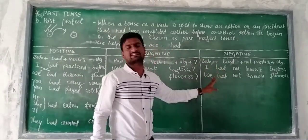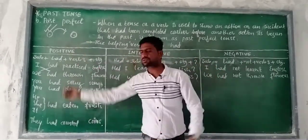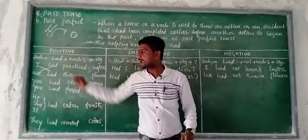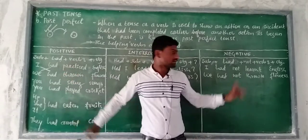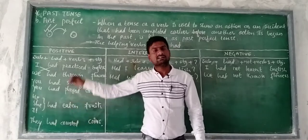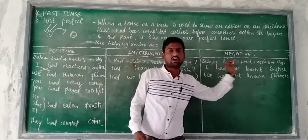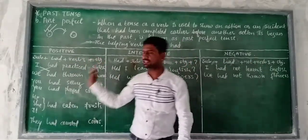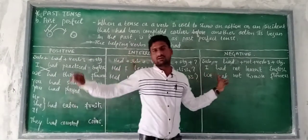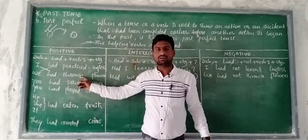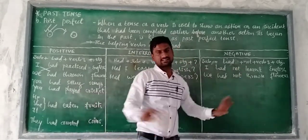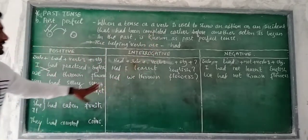For negative sentences, the difference from positive is only the addition of 'not.' So 'I had practiced English' becomes 'I had not practiced English.' And 'We had thrown flowers' becomes 'We had not thrown flowers.'